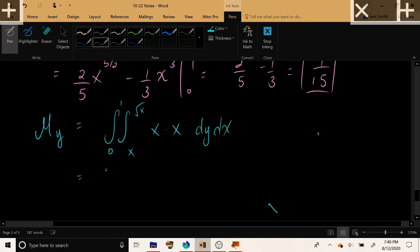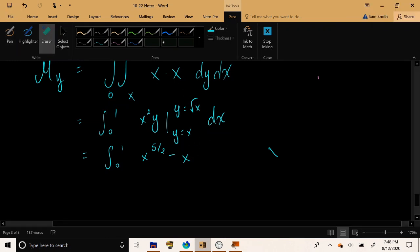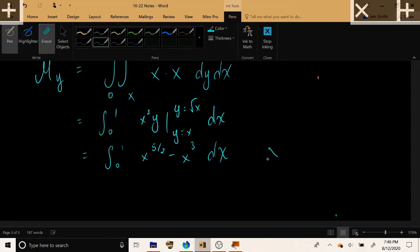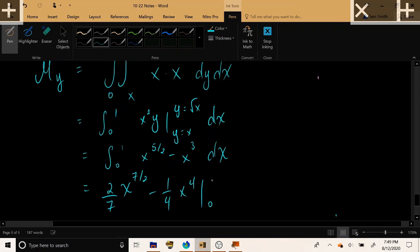So the integral from x to √x, the integral from 0 to 1, of now x times the density function. As before, we have x^2·y evaluated from y = x to y = √x, which simplifies to x^(5/2) minus x^3. And then, integrating one more time, we have x^(7/2)·(2/7) minus (1/4)x^4, evaluated from 0 to 1. So this is 2/7 minus 1/4, which works out to 1/28.